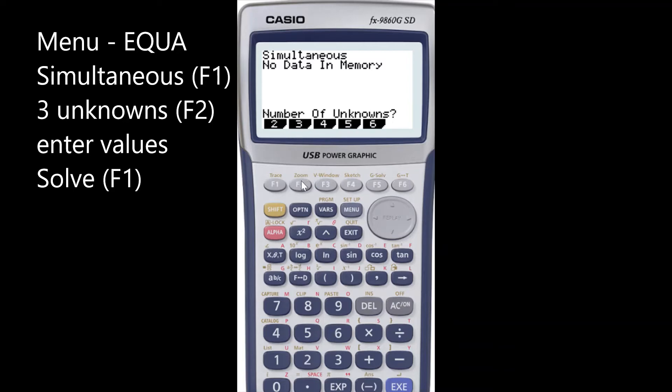Three unknowns means I will click F2 and this gives you the matrices that we can fill in. The general equation as you can see is written in that form: ANX plus BNY plus CNZ is equal to a constant DN. That's why we need to make sure that our equation is written in this form. All the variables are on the left hand side and then after the equal sign there is a constant D.